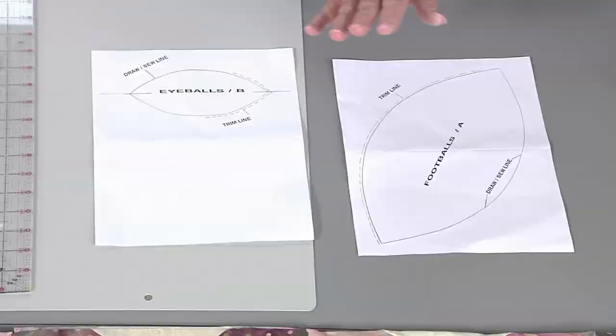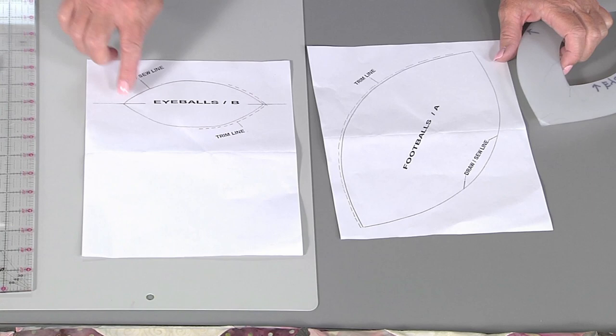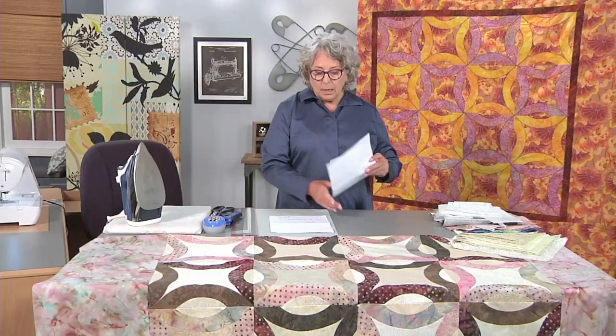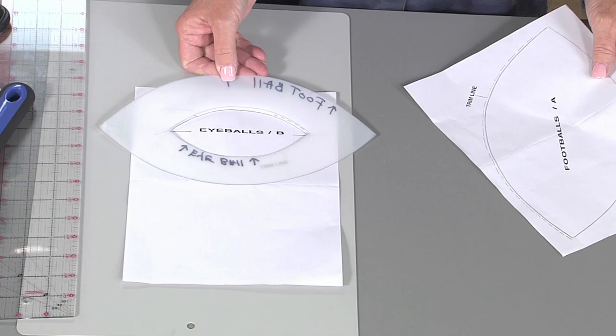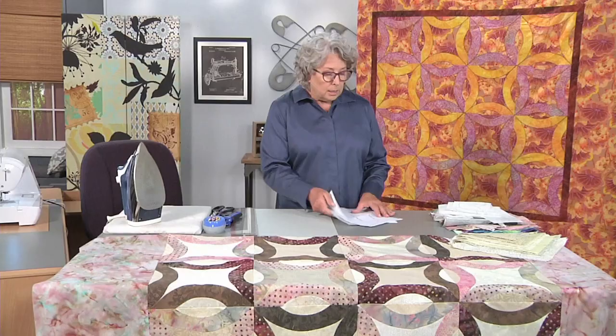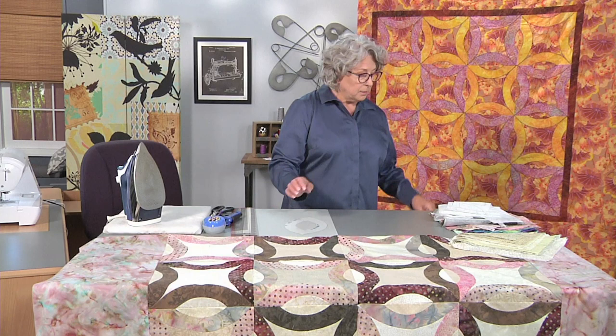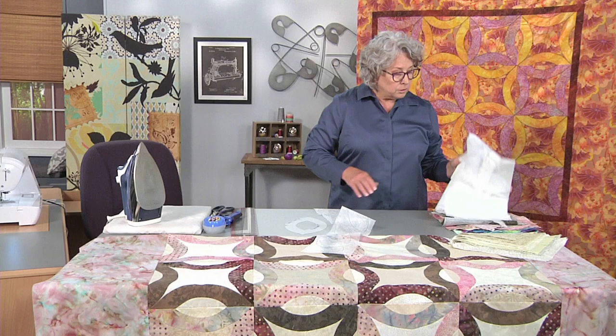So just for the purposes of this particular quilt, we're calling this the football and this is the eyeball. So I've gone ahead and traced that onto a piece of template plastic. I traced the football on the outside and cut that out, and then I traced the eyeball on the inside.